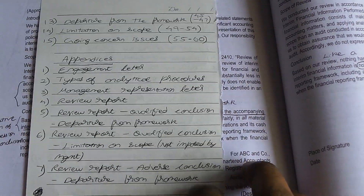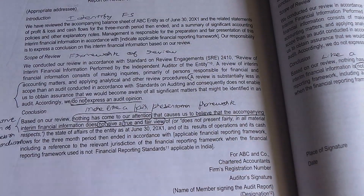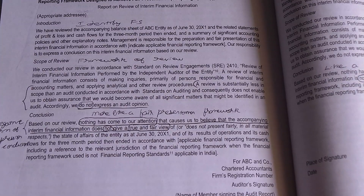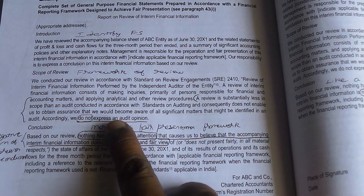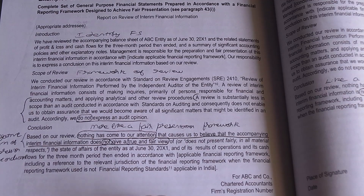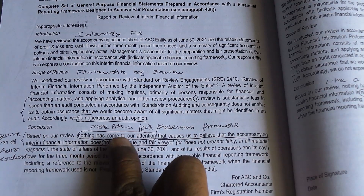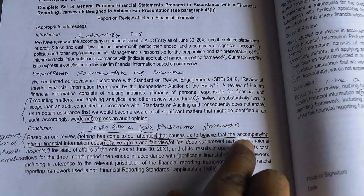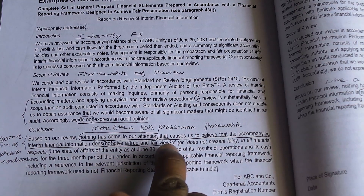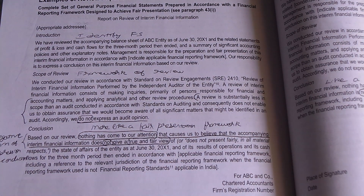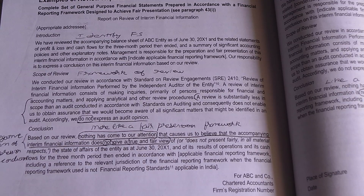Appendix 4 provides a sample auditor's review report. It is a plain review report — they have identified the financials, stated the review was done per SRE 2410, and note that no opinion is expressed but rather a conclusion. The conclusion is in negative form: nothing has come to our attention that causes us to believe it does not give a true and fair view. Negative plus negative is positive, implying no material misstatement was found, though only a limited or moderate level of assurance was obtained.